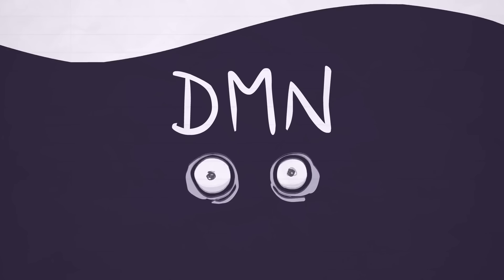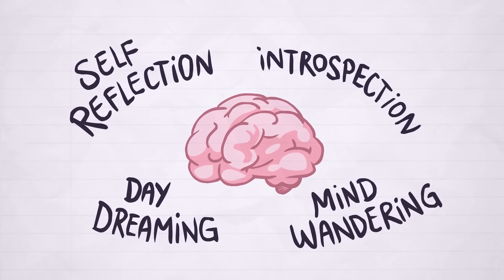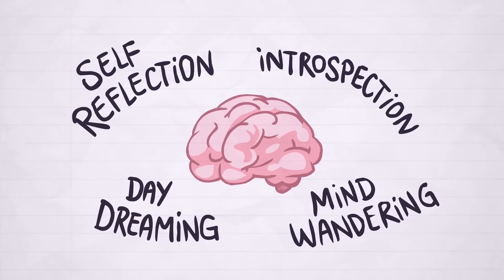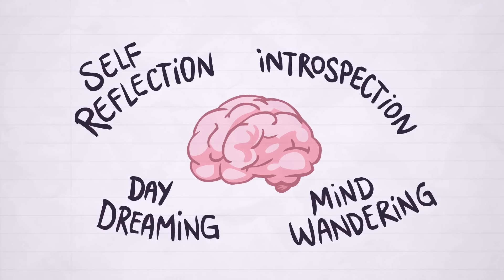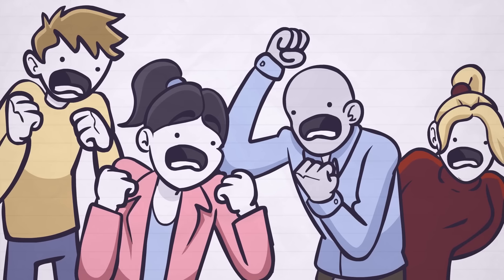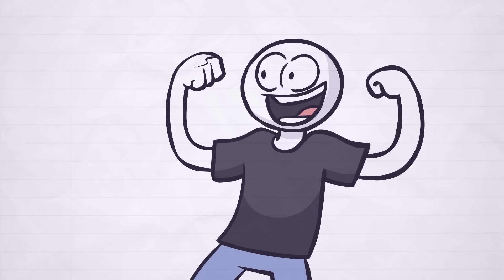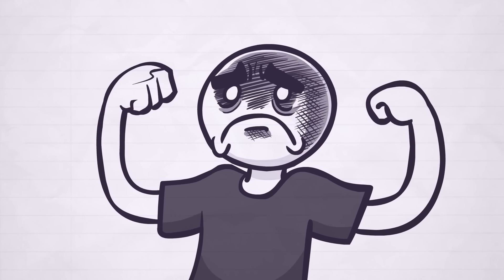This is when the brain default mode network, or DMN, becomes active. This web of interconnected brain regions plays a crucial role in various cognitive processes, including self-reflection, introspection, daydreaming, and mind-wandering. To make matters worse, studies show that millennials and Gen Z experience increased levels of stress and anxiety compared to previous generations, which further exacerbates our descent into nocturnal madness.